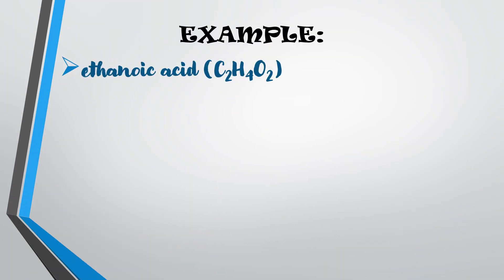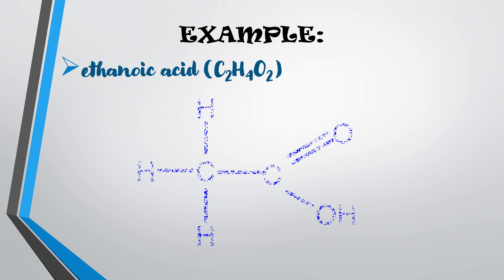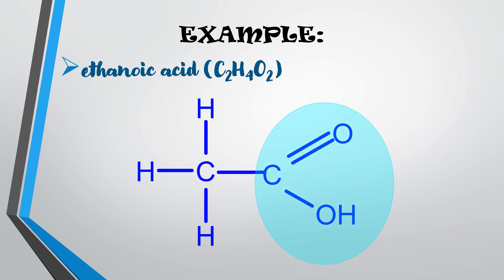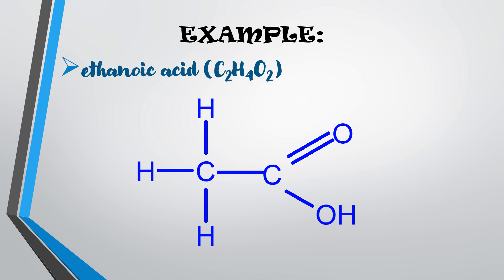For example, ethanoic acid has the general formula C2H4O2. Its structural formula shows 2 carbon and 4 hydrogen arranged such that there is a carbon with a double bond to an oxygen atom, and a carbon single bond with oxygen and an H atom. This region is the functional group for ethanoic acid, because it contains a double bond and elements other than carbon and hydrogen, and this is the region that reacts with other reagents to determine its chemical properties.